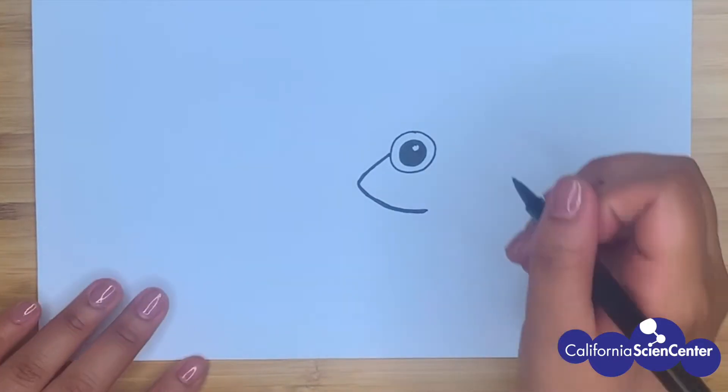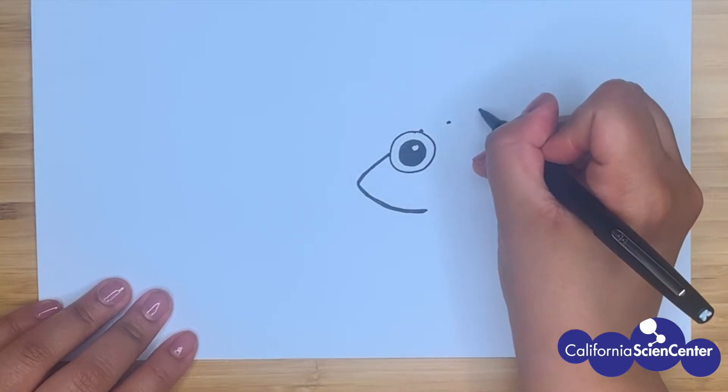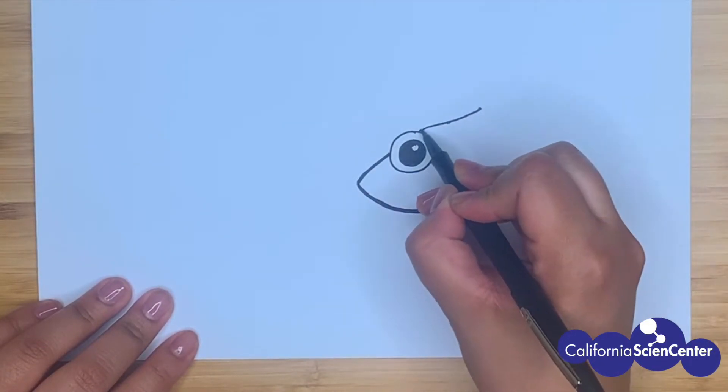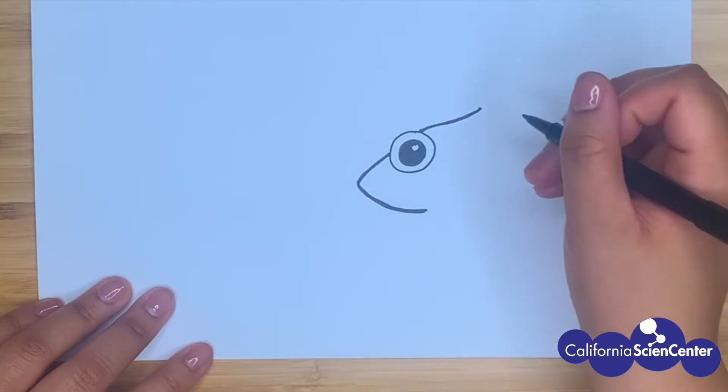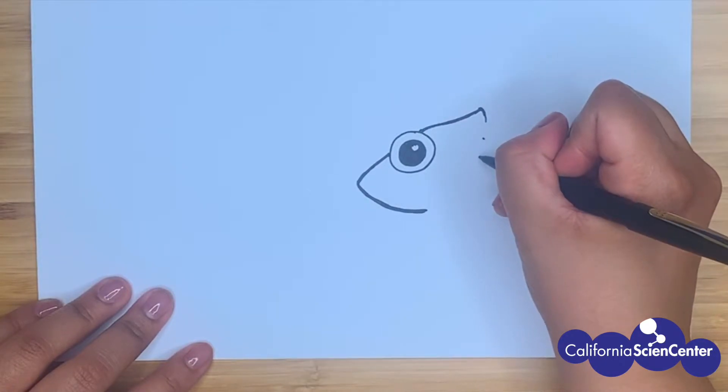Okay, now we're gonna draw the crest on the chameleon's head. We're gonna be using the same dot technique throughout. Chameleons have a crest on their head. This can look different in males and females. Usually the males have the taller crest.